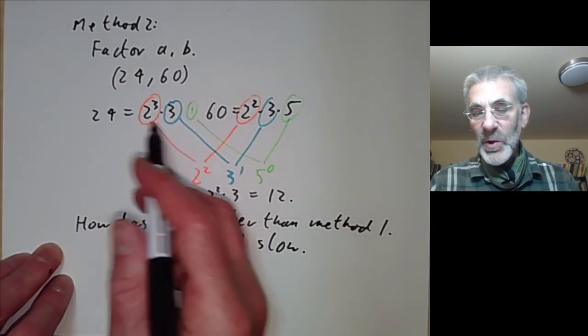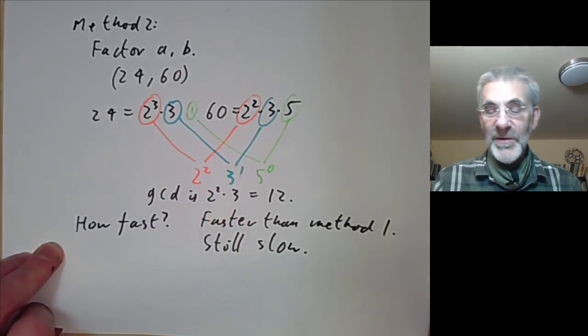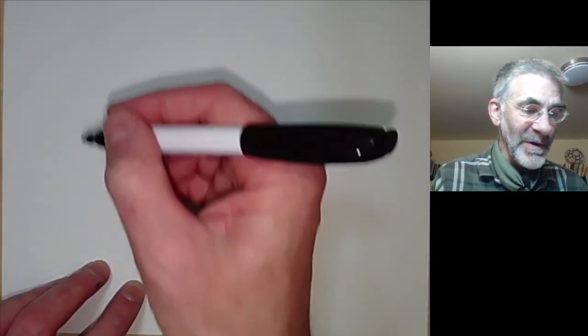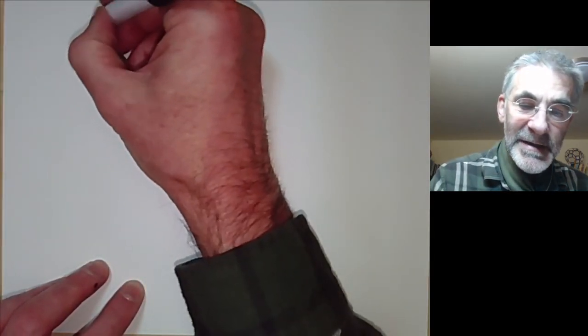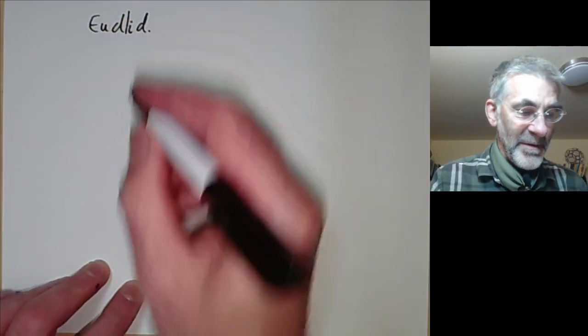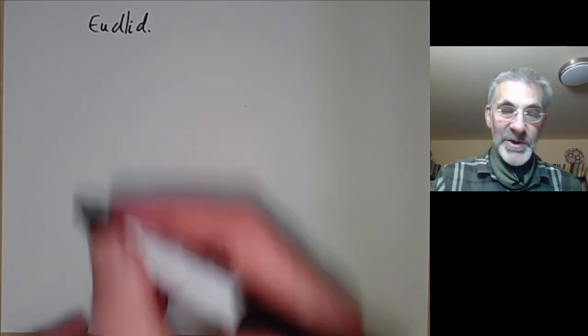Method 2 is a reasonably good method for small numbers — say a and b up to 100 or so if you're doing hand calculation. However, if a and b both have 100 digits, can we find a reasonably fast algorithm? The answer is yes: we now come to Euclid's algorithm.